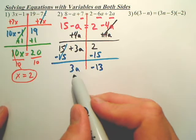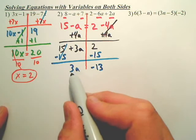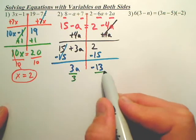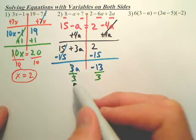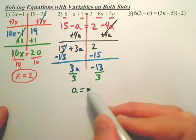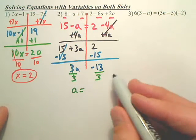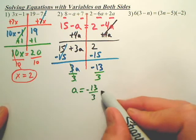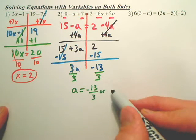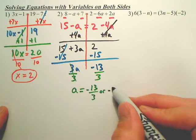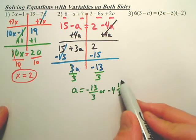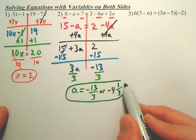To get the a completely by itself, you divide because that's 3 times a. The opposite of times is divide. That disappears, leaving you a, and this does not reduce. You can either write it as negative 13 over 3 or 3 goes into 13 four times with the remainder of 1. Either of those answers work.